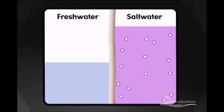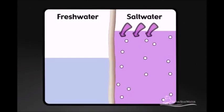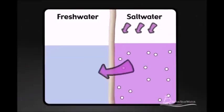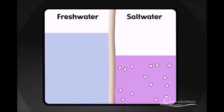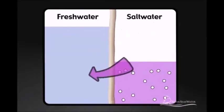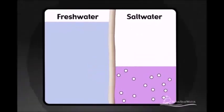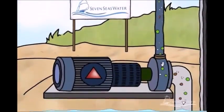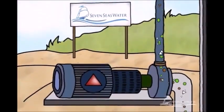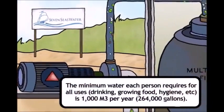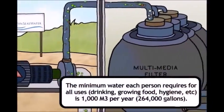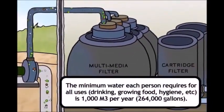Reverse osmosis is when the opposite occurs. By pressurizing the concentrated solution — the seawater — we are able to force water molecules to pass from the salty seawater solution through the membrane to the fresh water. To protect the reverse osmosis membranes from becoming clogged by solid particles that can be suspended in the seawater, the seawater is filtered before passing through the membranes.